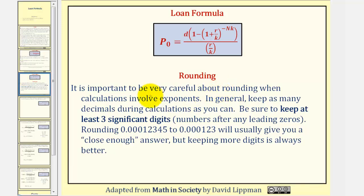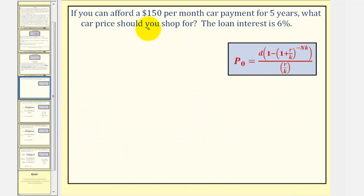Let's take a look at our first example. If you can afford a $150 per month car payment for five years, what car price should you shop for? The loan interest is 6%. Let's start by finding all the given information. If the monthly payment is $150, then we know that D equals 150. And because the payments are monthly, we can assume the number of compounds would be 12 per year, or monthly. And therefore, K equals 12.